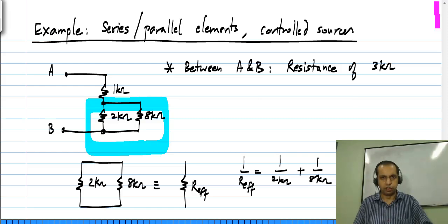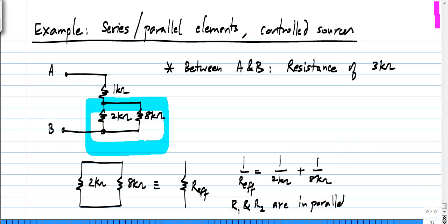By the way, for two resistors in parallel you are probably already familiar with the formula. If R1 and R2 are in parallel, they result in a single resistance value R1 R2 by R1 plus R2. This comes from the general relationship that the reciprocal of the effective resistance is the sum of reciprocals of individual resistances.